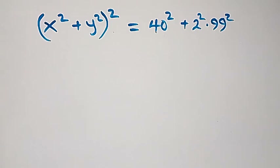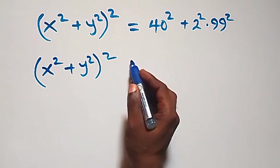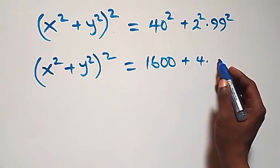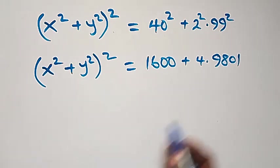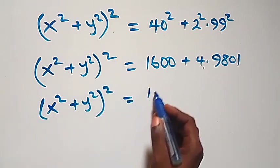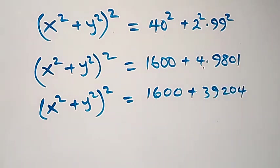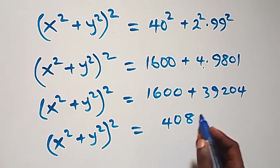So x squared plus y squared, all squared, equals 40 squared plus 2 squared times 99 squared. That is 1,600 plus 4 times 9,801, which gives 39,204. Therefore x squared plus y squared, all squared, equals 1,600 plus 39,204, which equals 40,804.